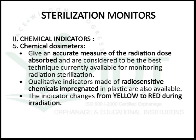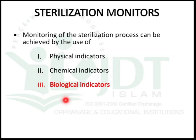Chemical dosimeters are used as chemical indicators in radiation sterilization. These substances give an accurate measure of radiation dose absorbed and are considered one of the best techniques currently available for monitoring radiation sterilization. Qualitative indicators made of radiosensitive chemicals impregnated in plastic are also available, and the indicator changes color from yellow to red during radiation.